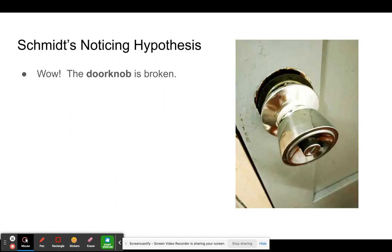To illustrate the noticing hypothesis: say a learner doesn't know the word 'doorknob.' Imagine he reaches for a doorknob and finds it broken. Suddenly the person next to him says, 'Wow, it looks like the doorknob is broken.' At this point, the learner is exposed to this new word in a very meaningful, comprehensible, and memorable way — it seems very relevant and necessary. According to Schmidt, that learner will learn the word much faster because this noticing experience drew his conscious attention to it. Schmidt believed we could even learn grammar this way.